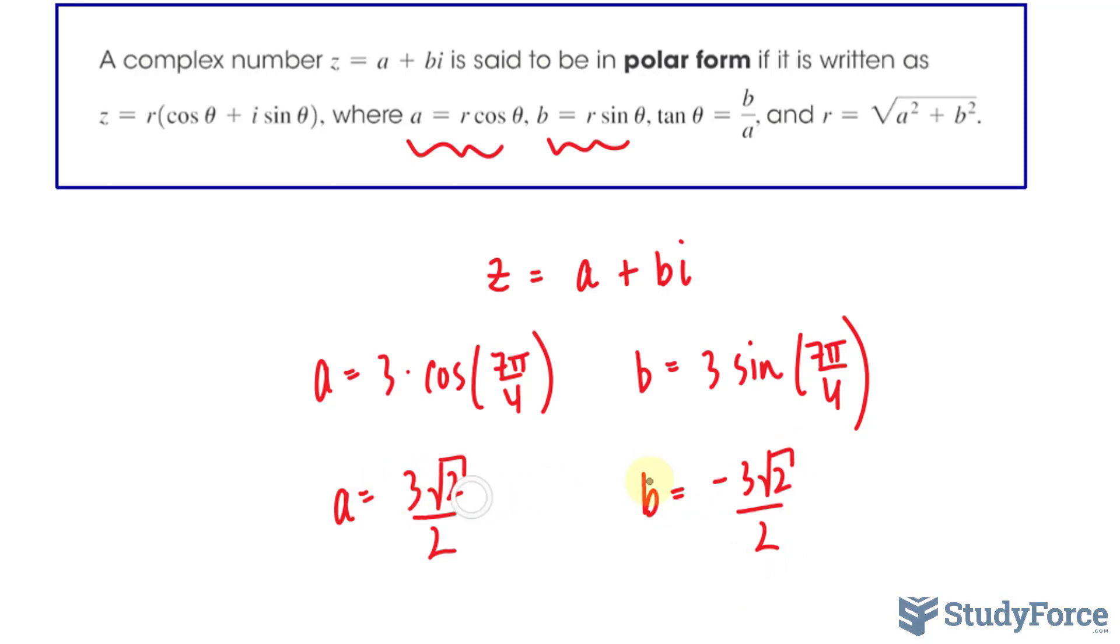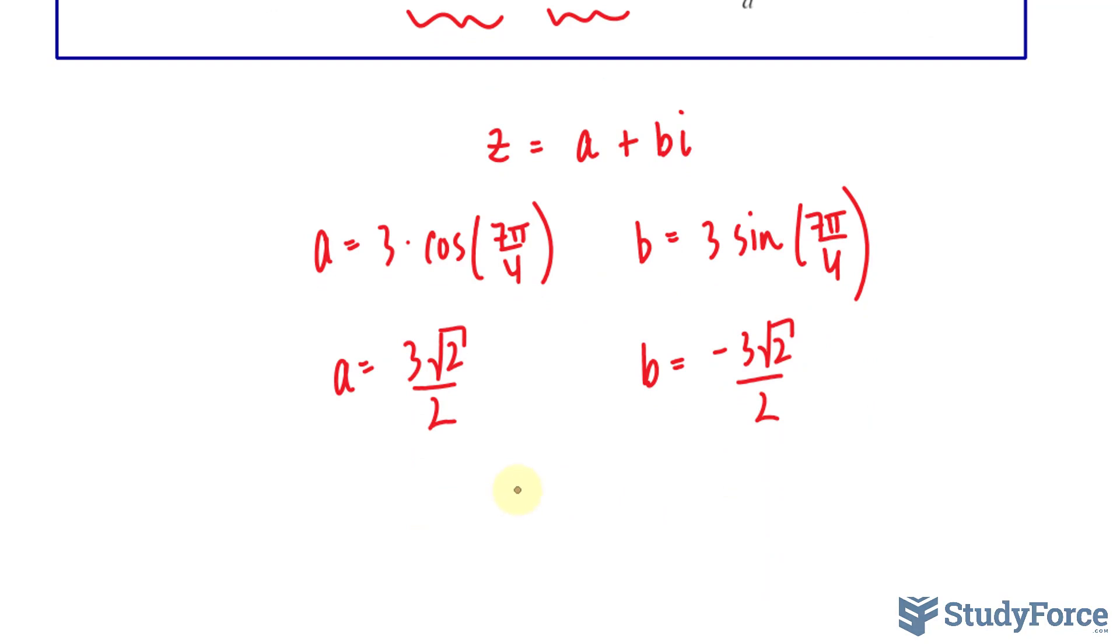Now, we write these two numbers down into this so that we have it in rectangular form. Z is equal to 3 times the square root of 2 over 2 minus 3 times the square root of 2 over 2 i. Now, there is a possibility that your final answer might look a little different than this. If your final answer has a square root at the bottom, that means you haven't rationalized, and this is the rationalized version of your answer. They both mean the same thing mathematically.